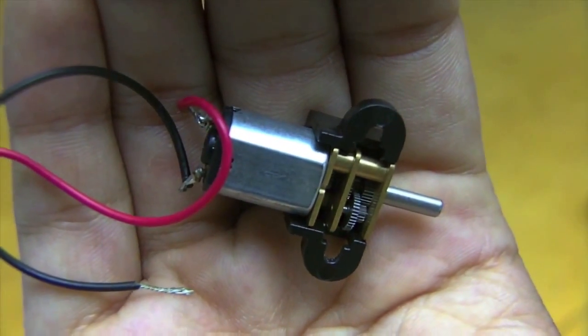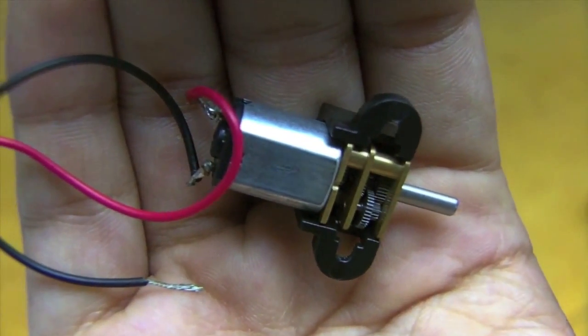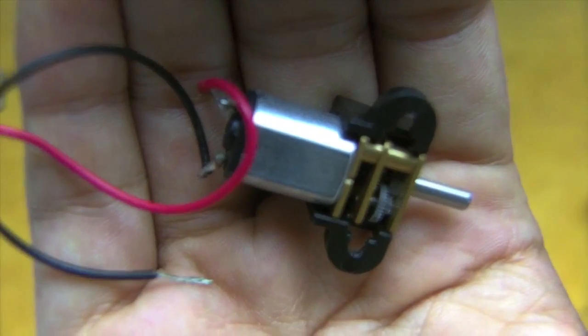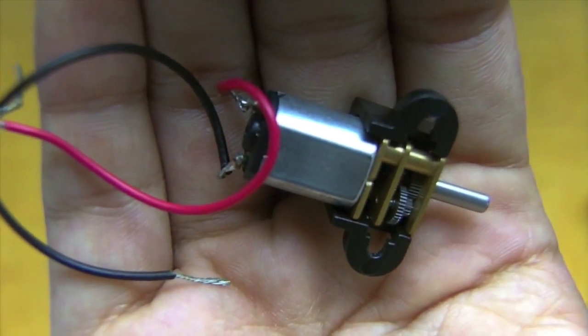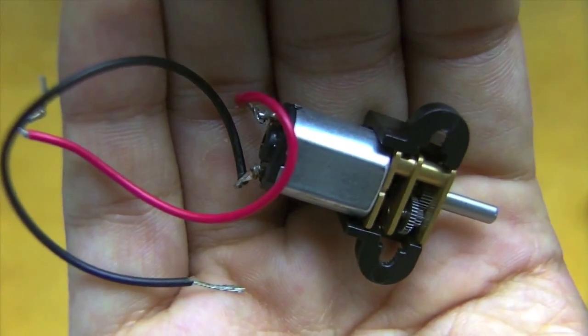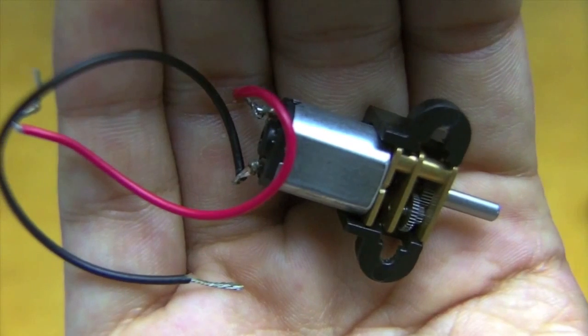To understand how brushless motors work, first let's take a look at how regular brushed DC motors work. A simple brushed motor like this consists of four parts: the stator, the rotor, the commutator, and the brushes.